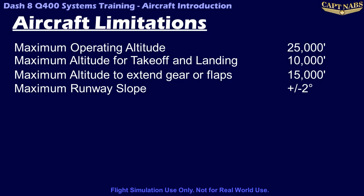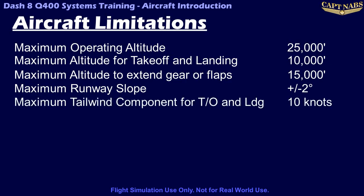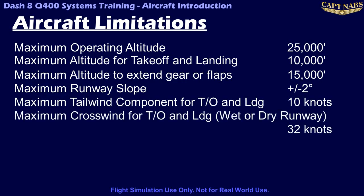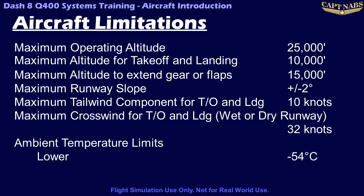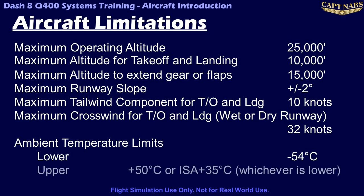The maximum tailwind component for takeoff and landing is 10 knots. The maximum crosswind component for takeoff and landing on a wet or dry paved runway is 32 knots. The ambient outside air temperature limits for the Q400 are a minimum of minus 54 degrees Celsius and a maximum of plus 50 degrees Celsius, or ISA plus 35 degrees Celsius, whichever is lower.